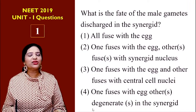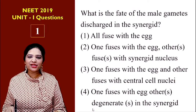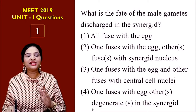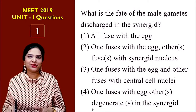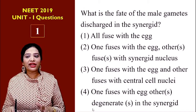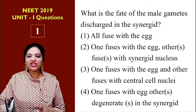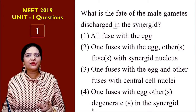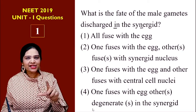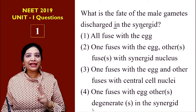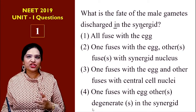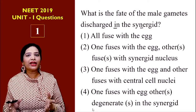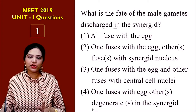Let's get started. So the first question is: what is the fate of male gametes discharged in the synergids? We know that inside the synergid cells, two male gametes get discharged. The pollen tube brings two male gametes. So what happens to those gametes? That is the question.